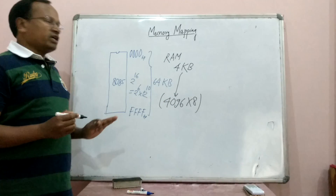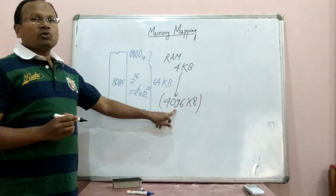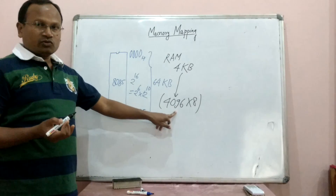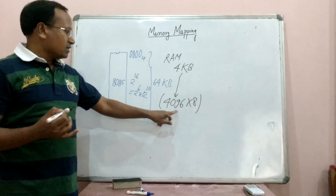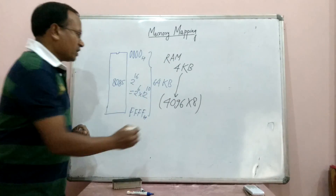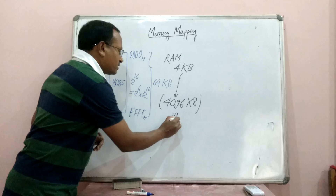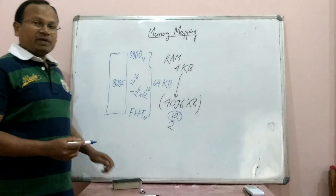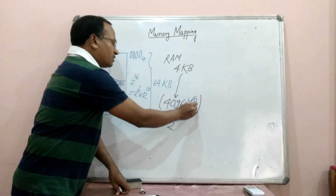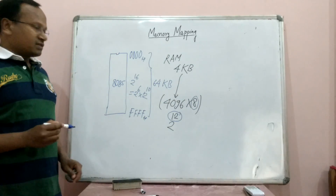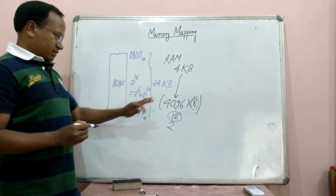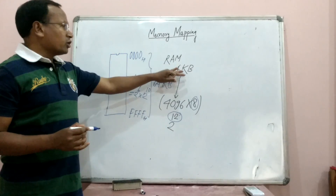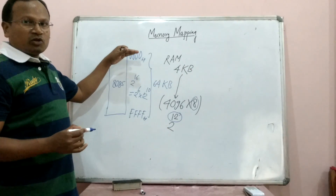Whenever we represent memory like this, the 4096 represents the number of registers — each register represents one memory address. So how many memory addresses will be there in this RAM? 2 to the power 12, which means the number of address lines will be 12. The 8 represents the size of each register: each register size is 8 bits, that is 1 byte. Now let us understand how we allocate this 4KB of memory space in the entire memory space.